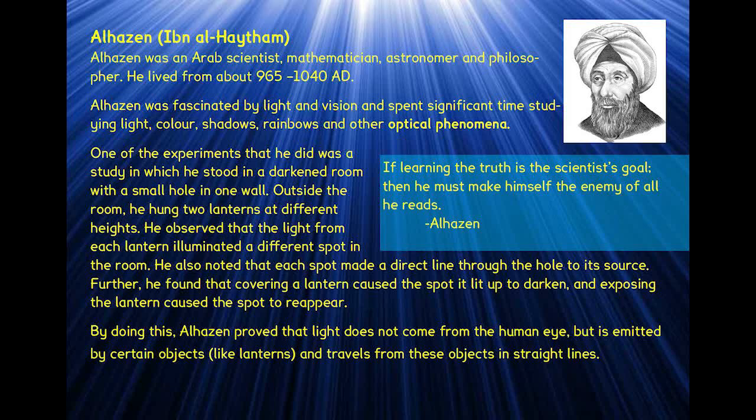So by doing this al-Hassan proved that light does not come from the human eye but is emitted by certain objects like lanterns and travels from these objects in straight lines.